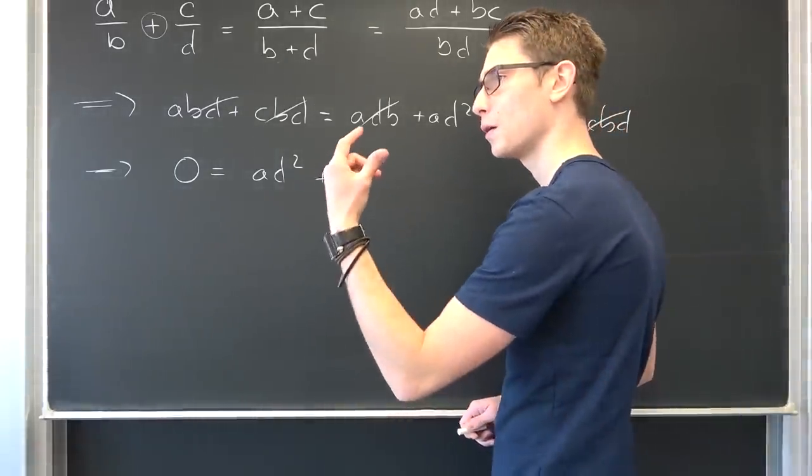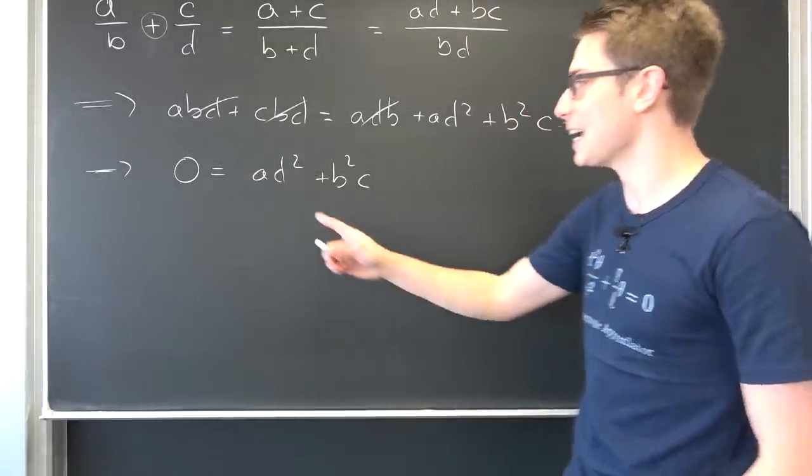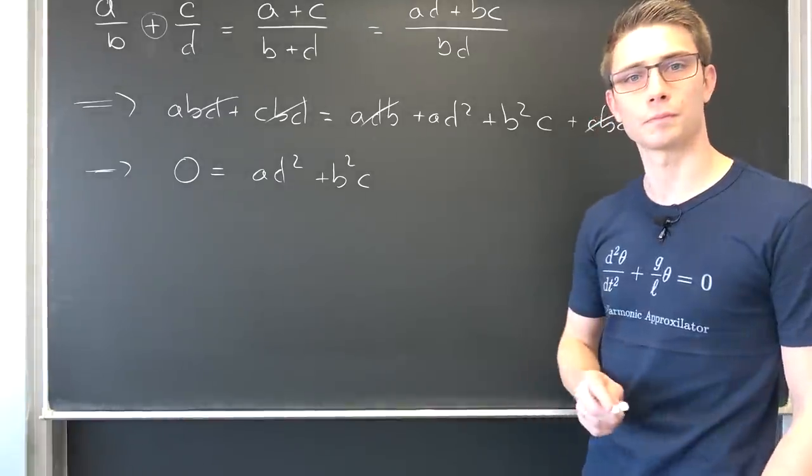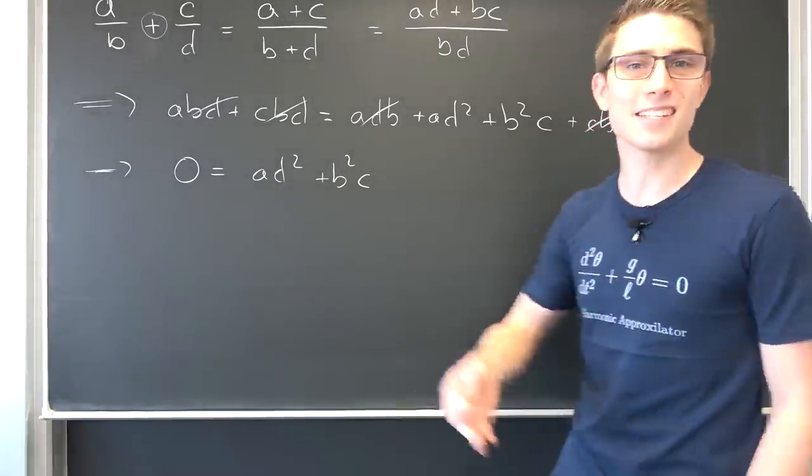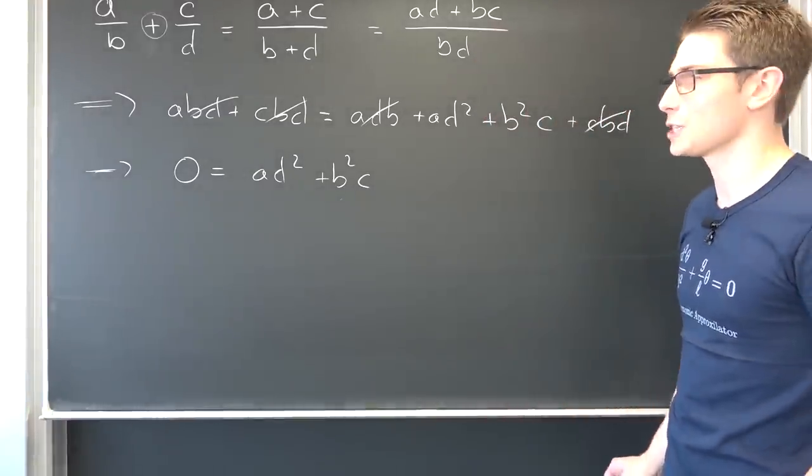Now what about the positive integers with zero? Well then we could say that a and c must both trivially be equal to zero. And then it would work out. But this is the only solution that does work out in the positive integers with zero.